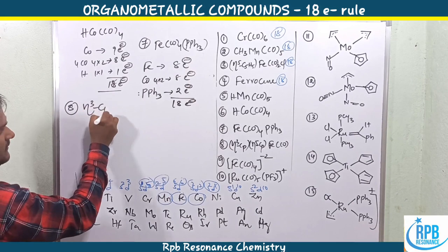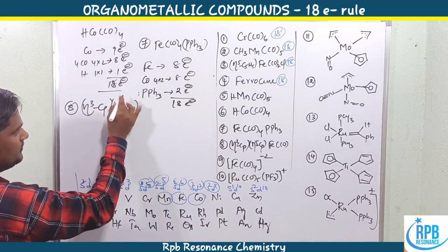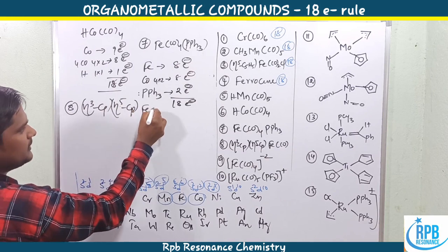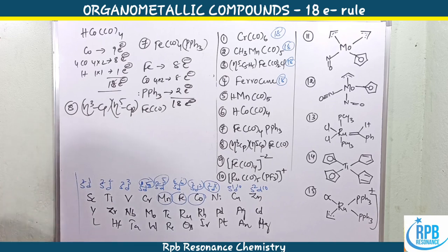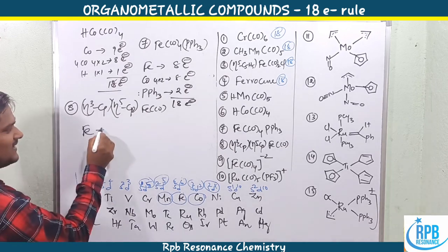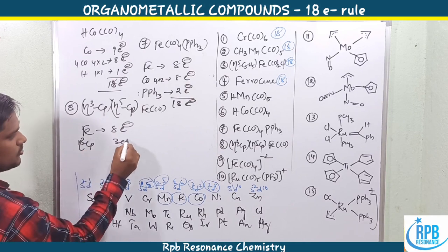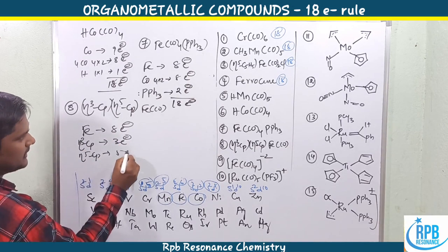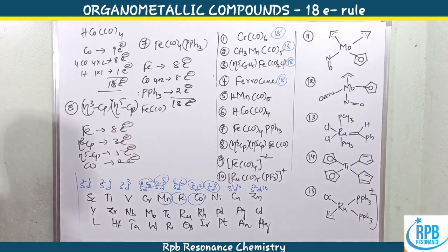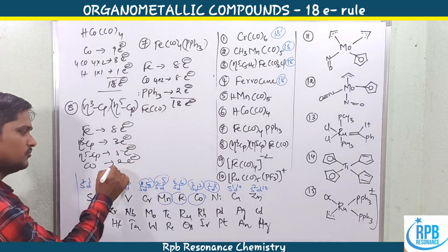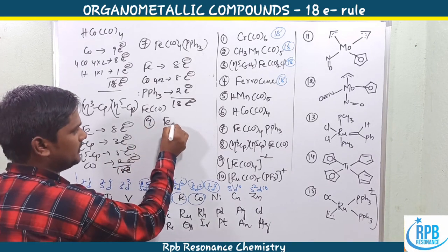The eighth example is (η³-C₅H₅)(η⁵-C₅H₅)Fe(CO). Neutral method: iron — 8 electrons. η³-Cp contributes 3 electrons (hapticity = 3). η⁵-Cp contributes 5 electrons. One carbonyl: 2 electrons. Total: 8 + 3 + 5 + 2 = 18 electrons.